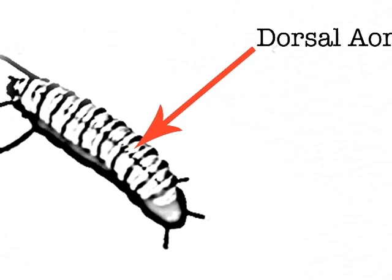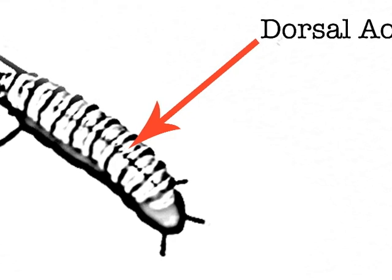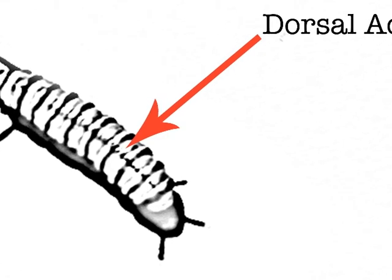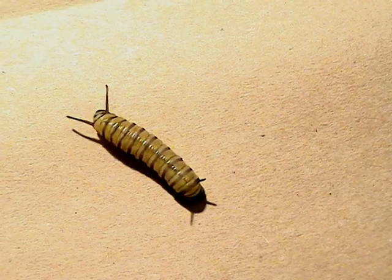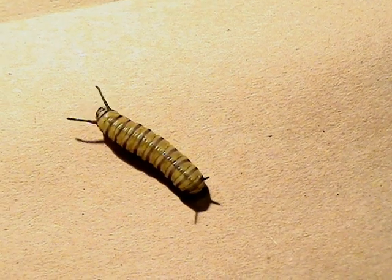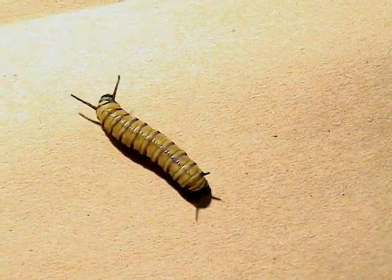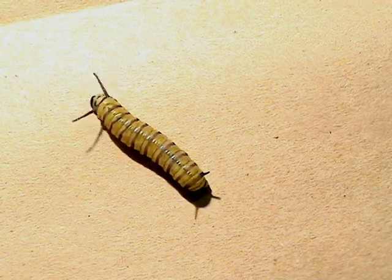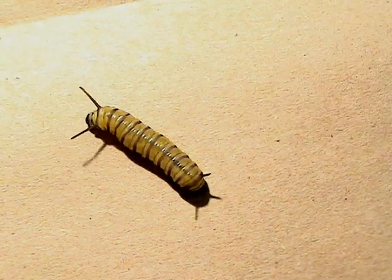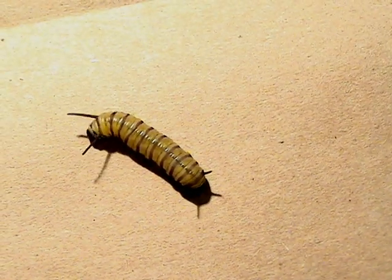Hi, this is Chip Taylor from Monarch Watch. We found an interesting caterpillar in our laboratory that allows us to explain something about circulation in insects and in vertebrates in general.